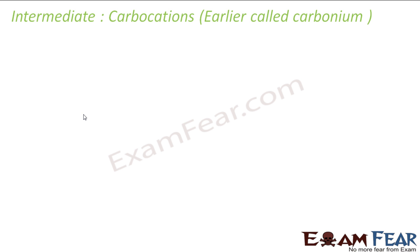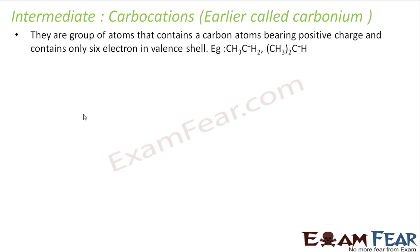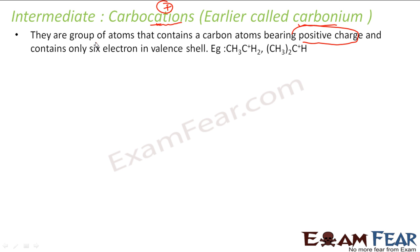So the question is: what is carbocation? It was earlier called carbonium. As the name suggests, cation means it has a positive charge. These are a group of carbons which have a positive charge and contain only six electrons in the valence shell.